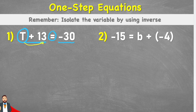So let's rewrite that side and have t plus 13 negative 13 equals. And then because I've inserted a negative 13 to one side, I have to then put it on the other side to keep my equation balanced. So I would have negative 30 minus 13.